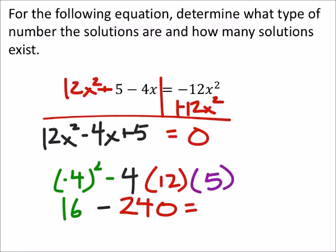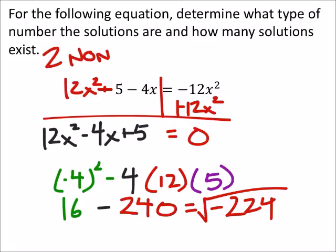And 16 minus 240 is a negative 224. So right there, we can see that it would be the square root of that negative number, which means we would have two non-real solutions.